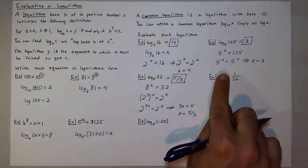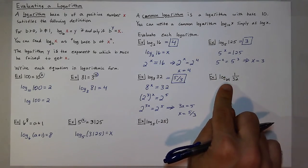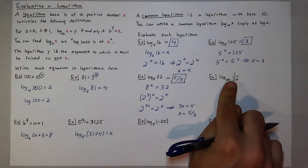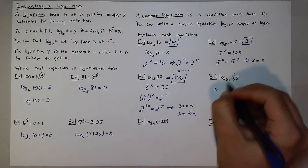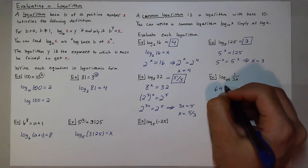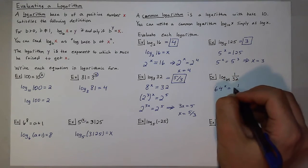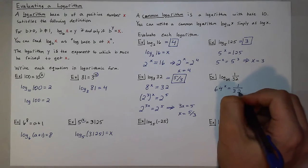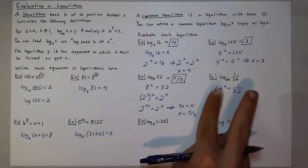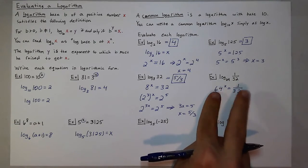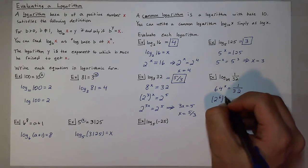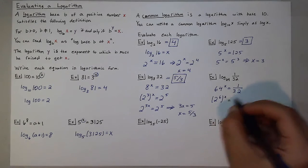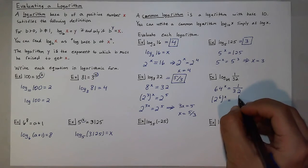Now, for log base 64 of 1 over 32, I'm going to do the same process. I'm looking for what power do you raise 64 to to get 1 over 32? Both 64 and 32 are powers of 2. So 64 can be rewritten as 2 to the 6th to the x. And 1 over 32 can be rewritten as 1 over 2 to the 5th.